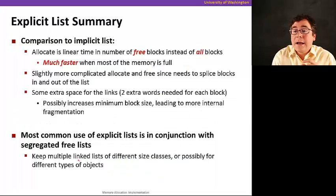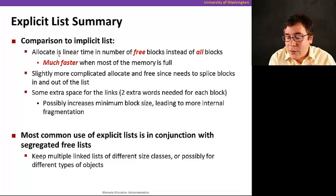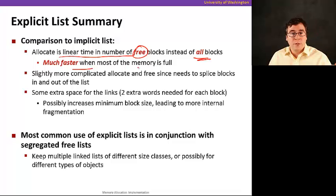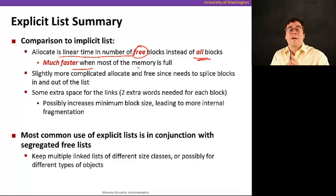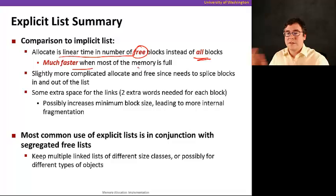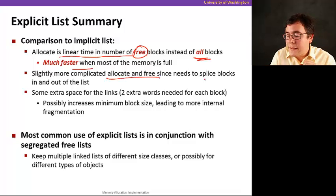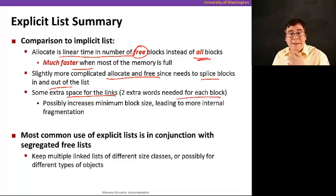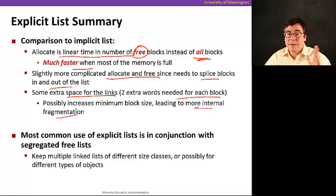To summarize, comparing explicit to implicit free lists: allocation is linear in the number of free blocks instead of all blocks, which is much faster when most memory is full. In the implicit case you'd have to traverse most of memory to find a free block. With explicit free lists, it's slightly more complicated to allocate and free because you need to splice blocks in and out. You also need two extra words per block for the links, which increases minimum block size and leads to more internal fragmentation.